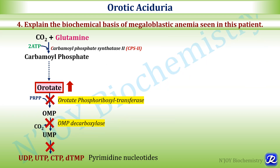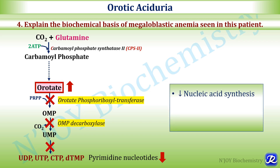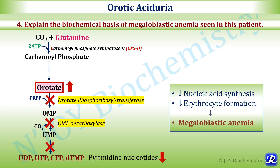The fourth question is: explain the biochemical basis of megaloblastic anemia seen in this patient. In orotic aciduria, there is decreased pyrimidine nucleotide biosynthesis, which leads to decreased nucleic acid synthesis, decreased erythrocyte formation, and megaloblastic anemia. Megaloblastic anemia encompasses a heterogeneous group of anemias characterized by large red blood cell precursors called megaloblasts, due to impaired DNA synthesis which inhibits nuclear division. Cytoplasmic maturation is mainly dependent on RNA and protein synthesis, which is less impaired.